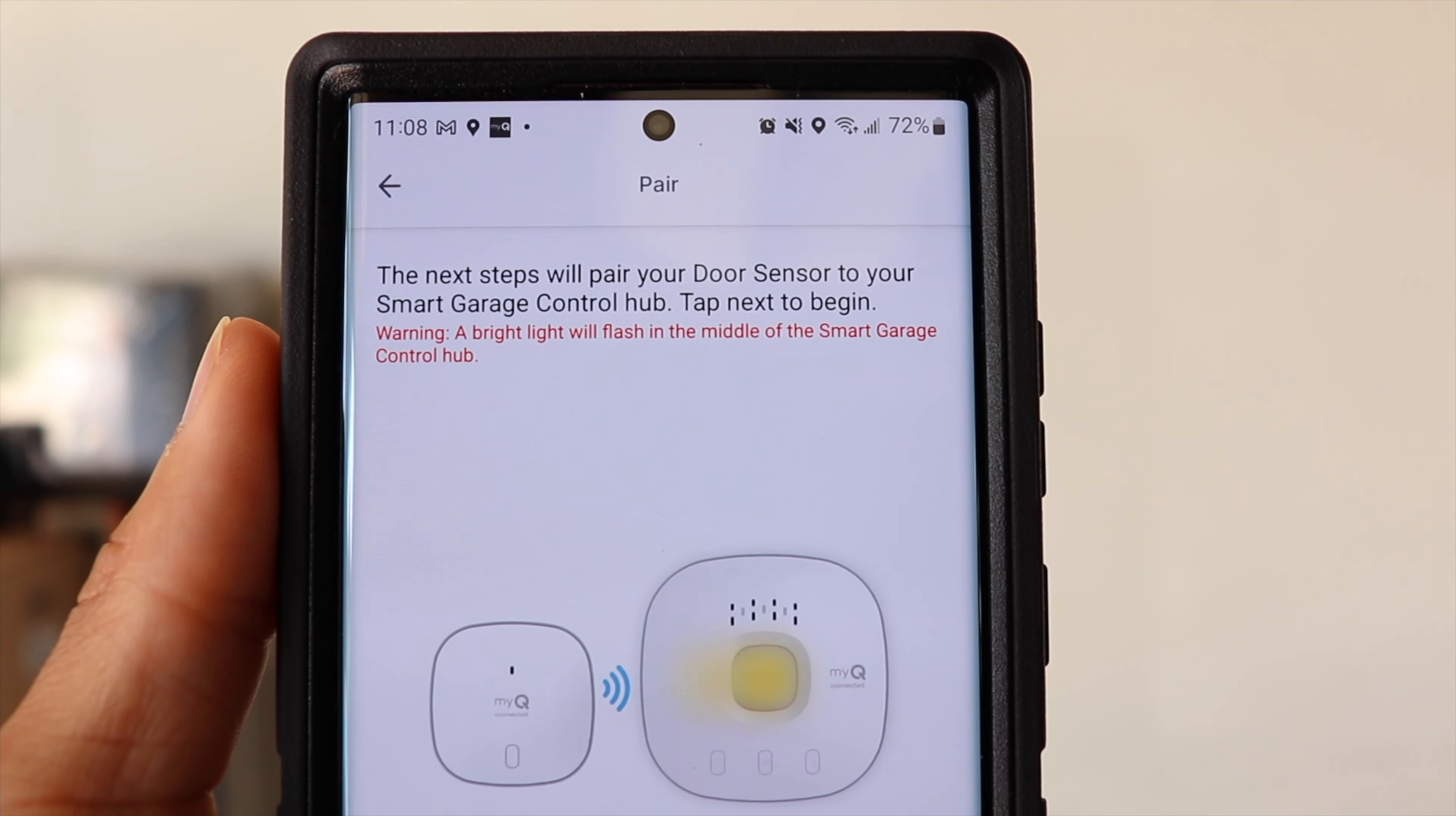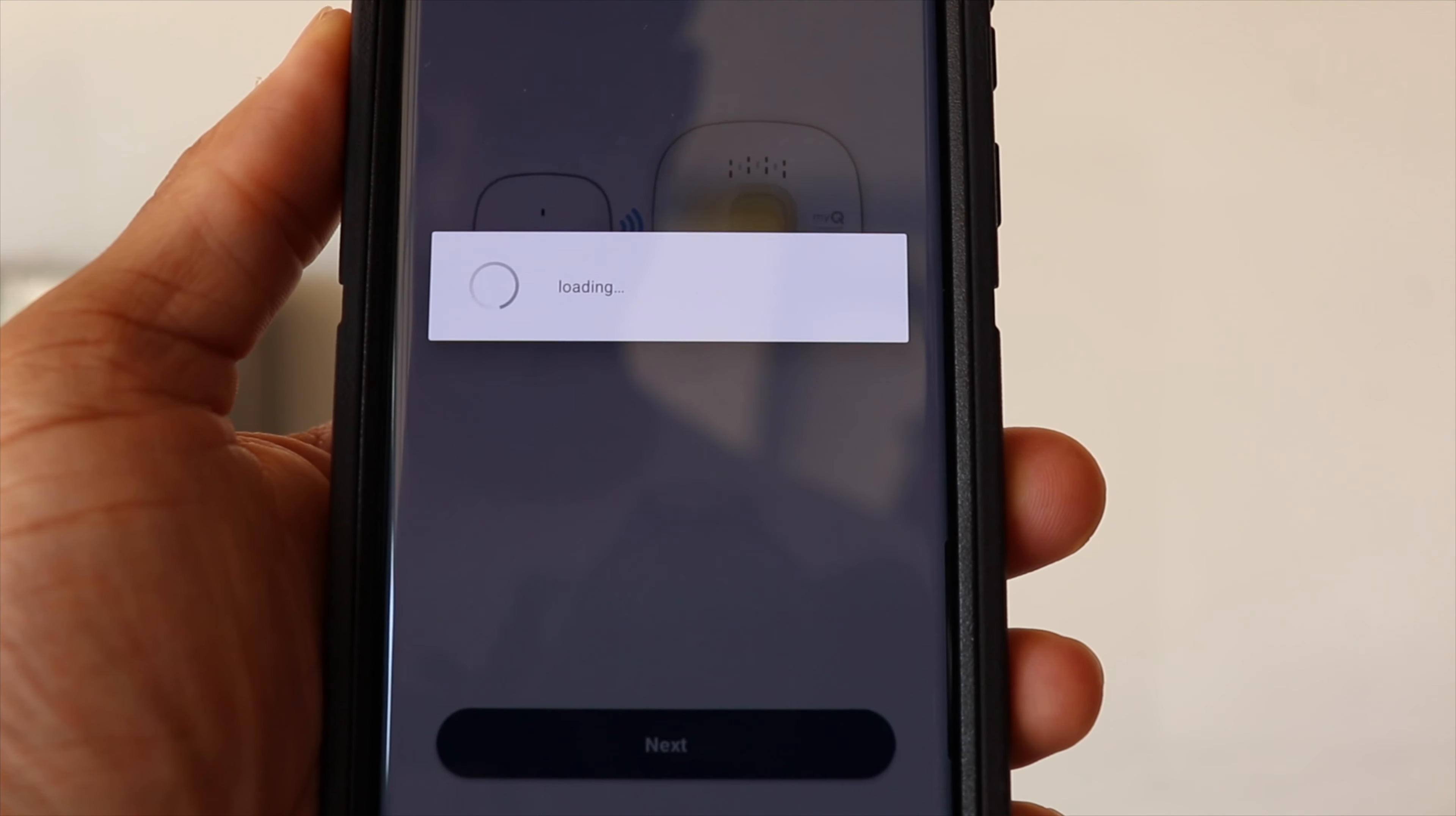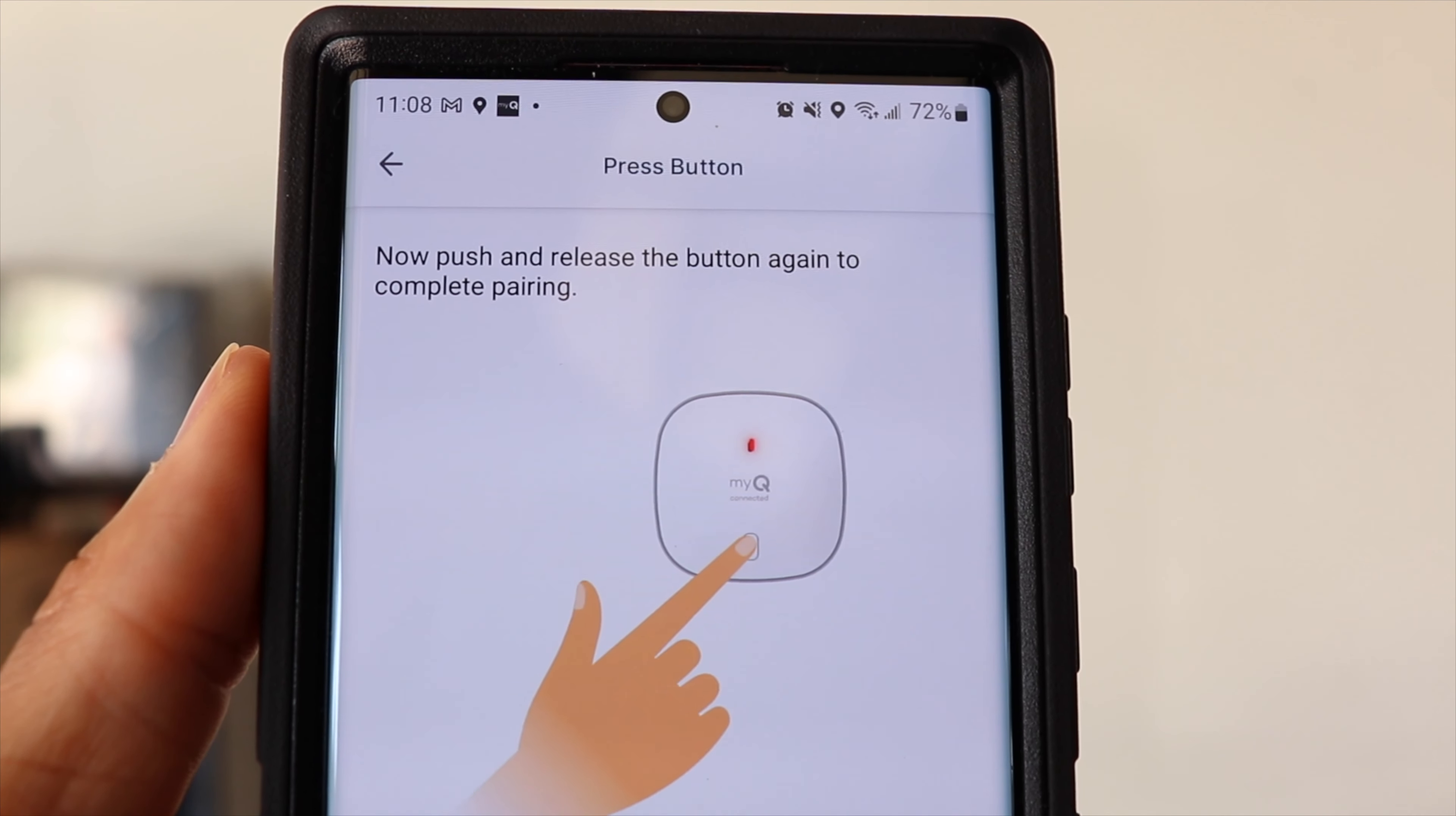The next step is to connect the door sensor to the control hub. So we'll go ahead and hit next. And then we'll press the button on the front of the door sensor one more time.